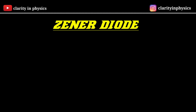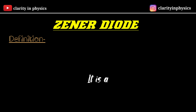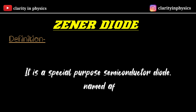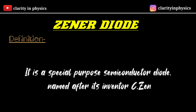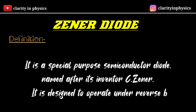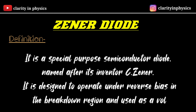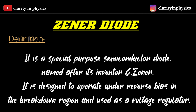Zener diode — let us start with its definition. It is a special purpose semiconductor diode named after its inventor C. Zener. It is designed to operate under reverse bias in the breakdown region and is used as a voltage regulator.